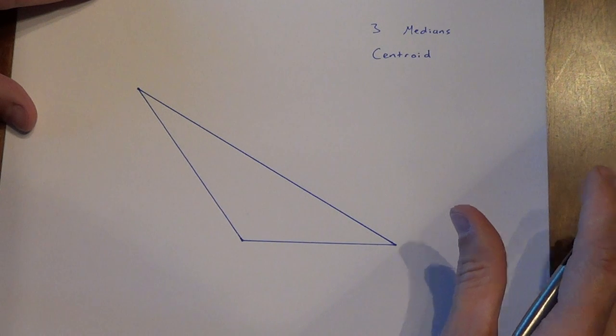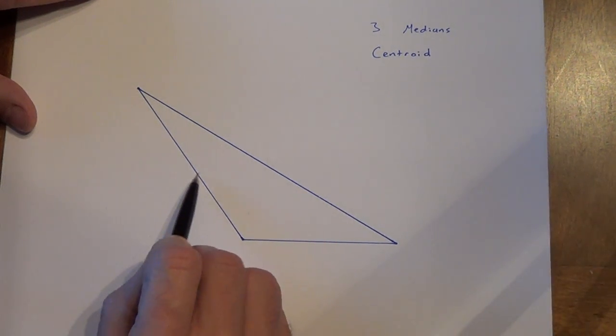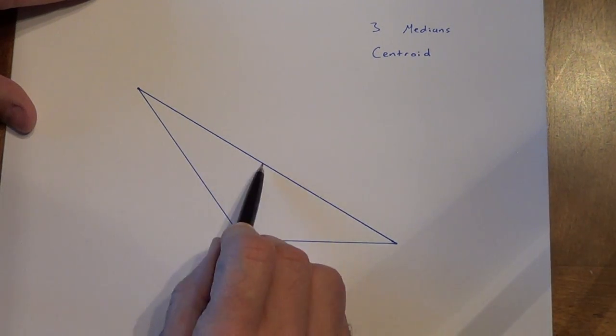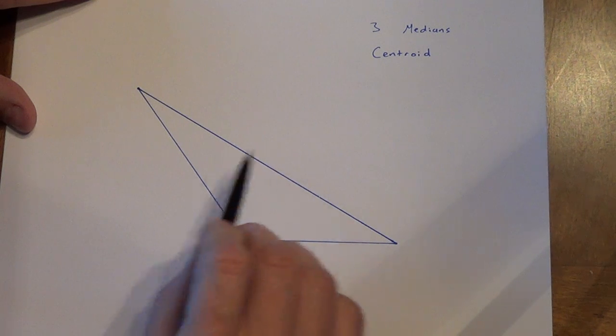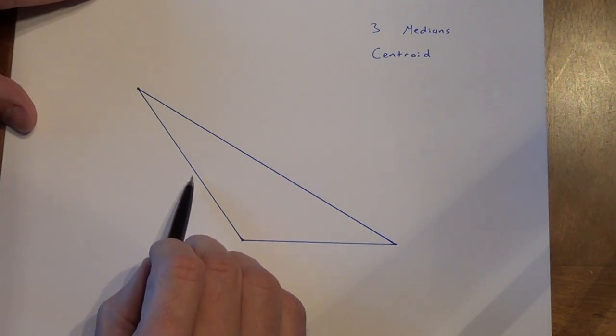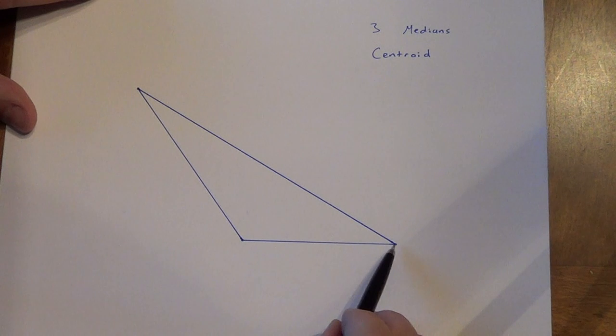So, kind of like a mid-segment, it's going to start at the midpoint of one side of a triangle, but a mid-segment traveled to another midpoint. Okay, a median is not going to do that. A median is going to start at a midpoint of one side, and it's going to go to the opposite vertex.